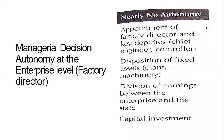We are back with part two — you can call it part 2.2. We were talking about management and management education, management autonomy, and management federalism — specifically how the managerial structure actually worked in the Soviet Union. Part two talks about the management decision autonomy given to the enterprise level, to the factory director.